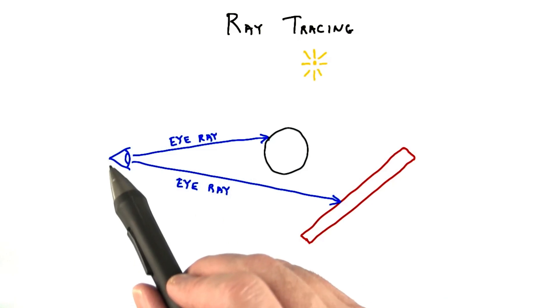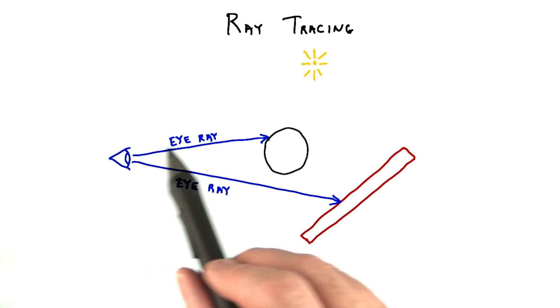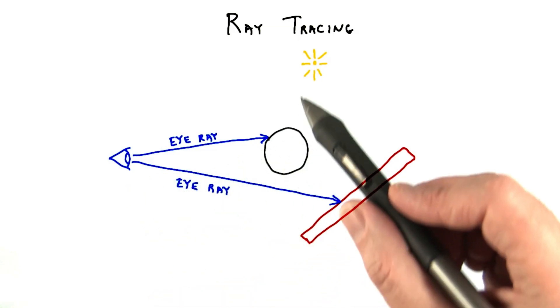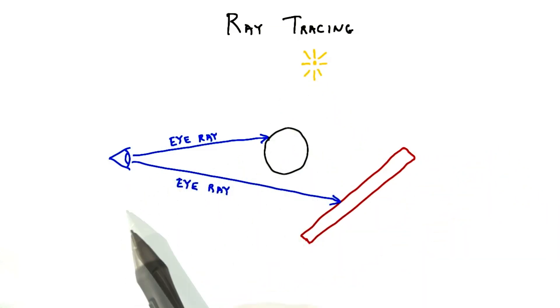At its simplest, ray tracing can give the same result as rasterization. Each ray from the eye finds the closest object along it. The effect of light on the surface is computed and the result is displayed. However, that's just the starting point for ray tracing.